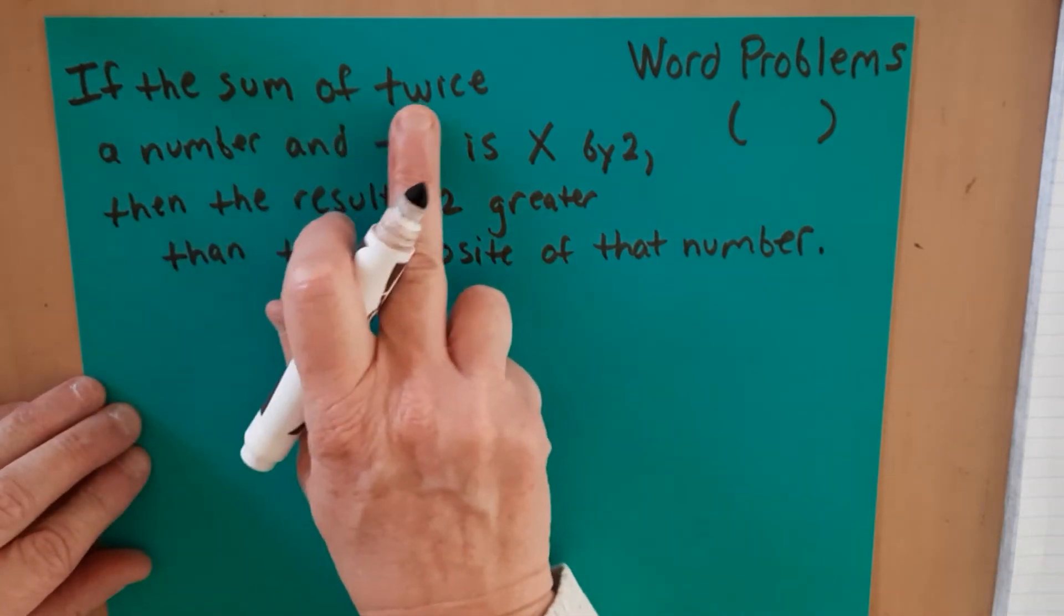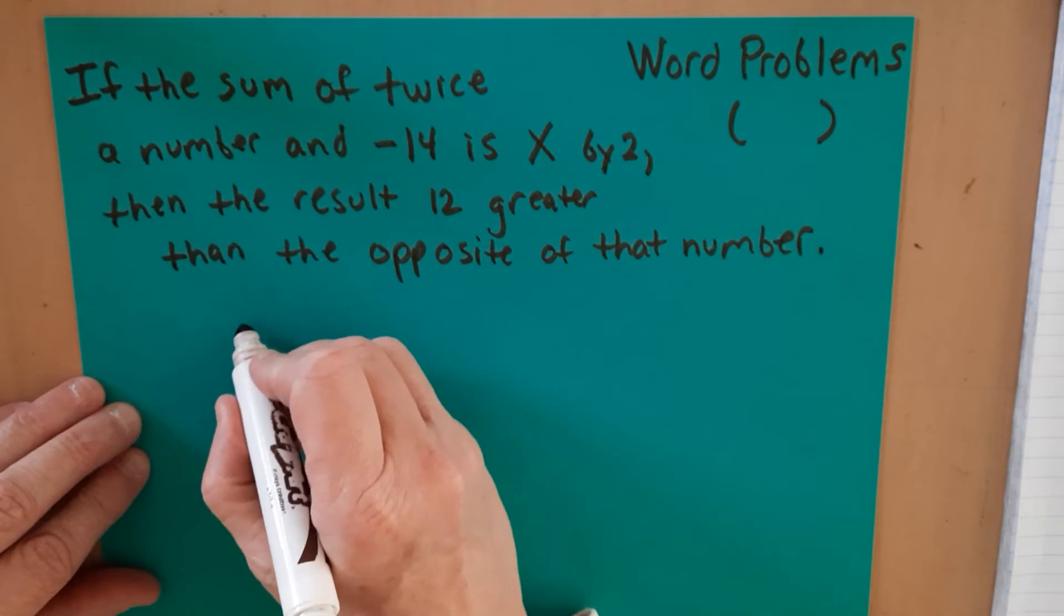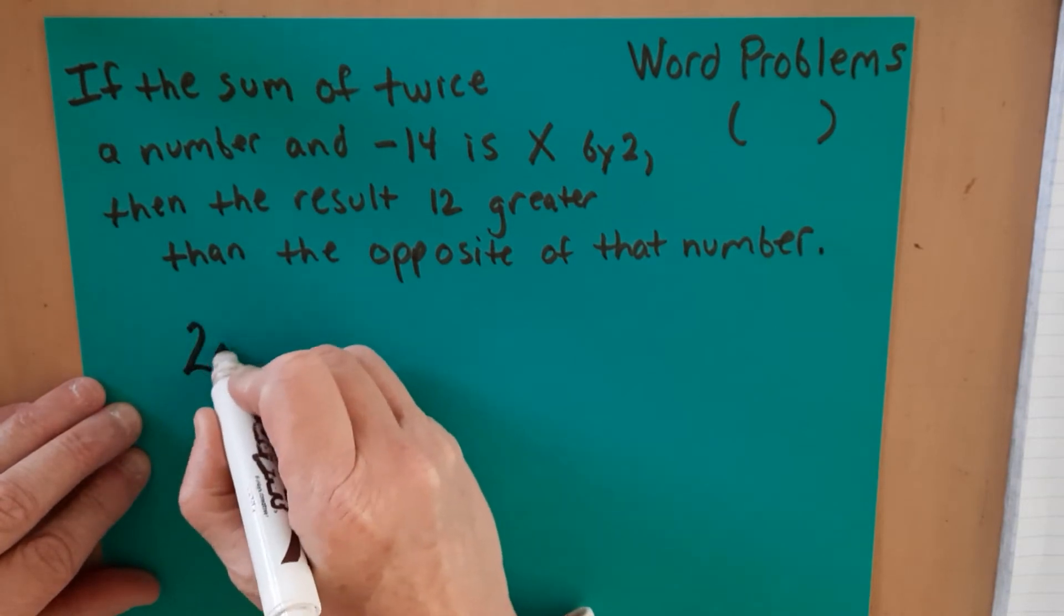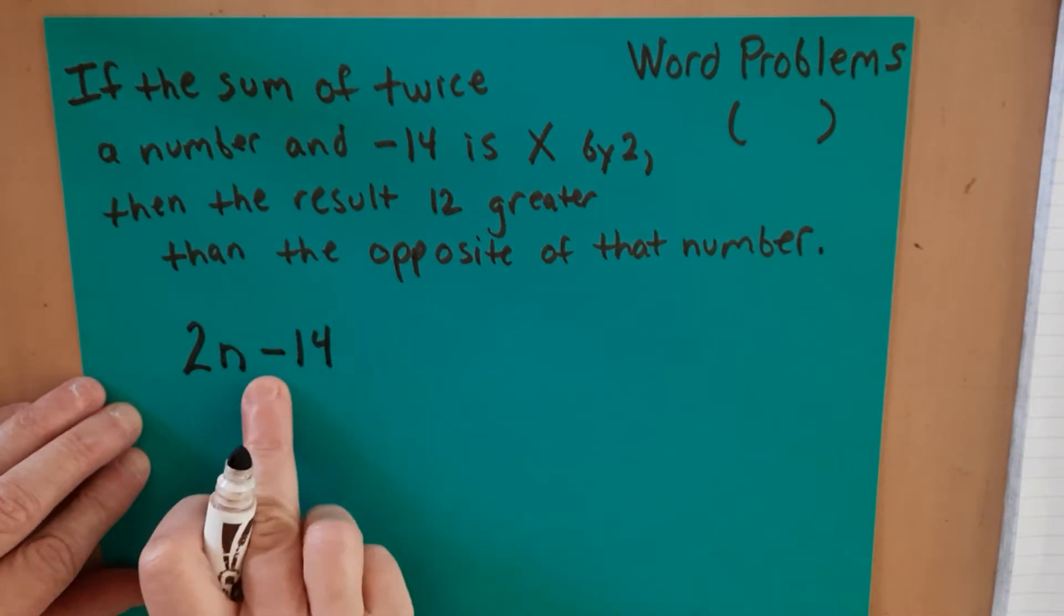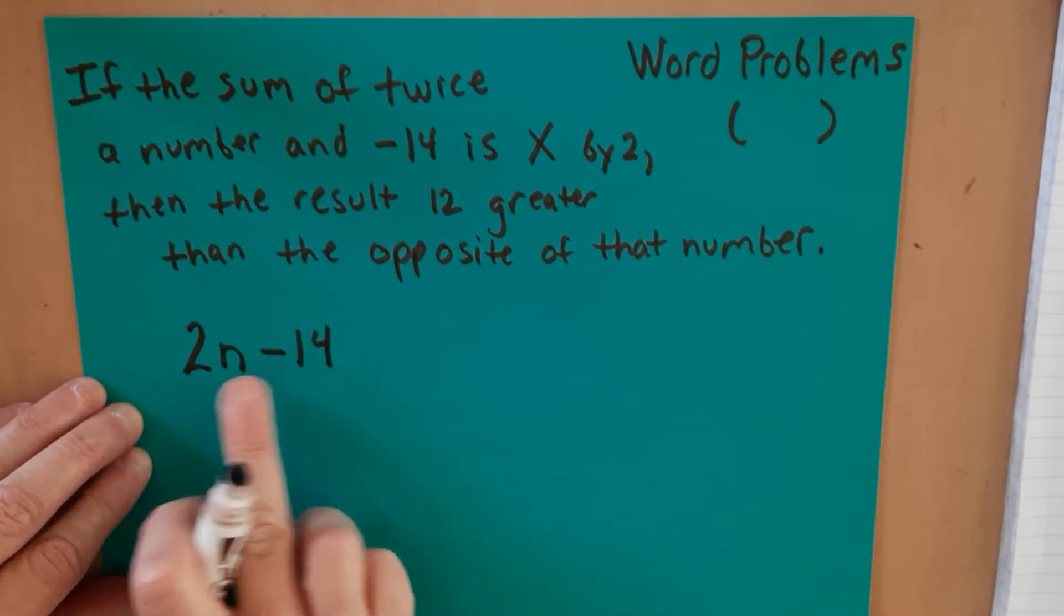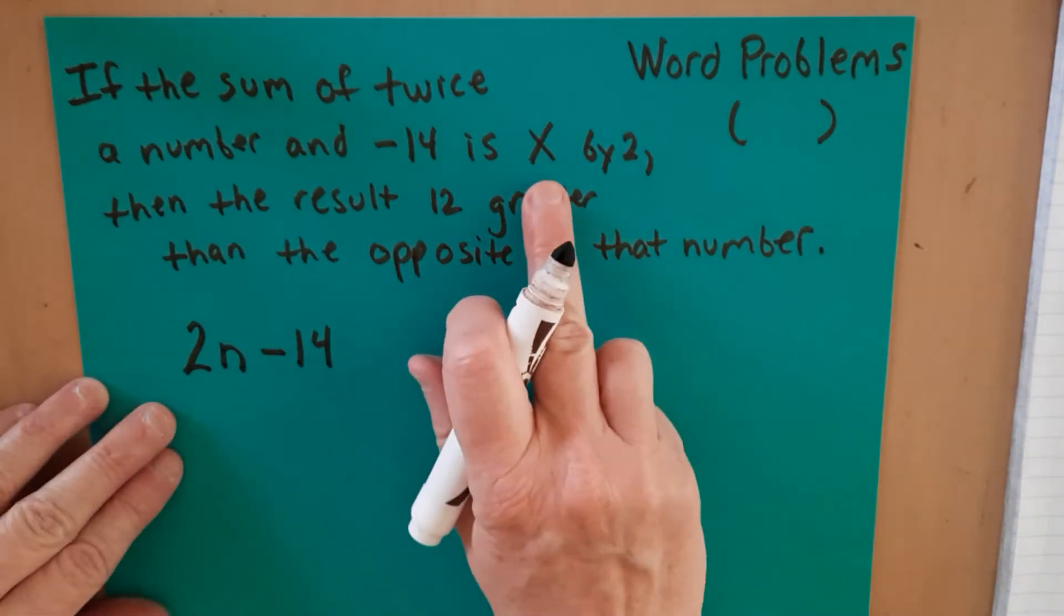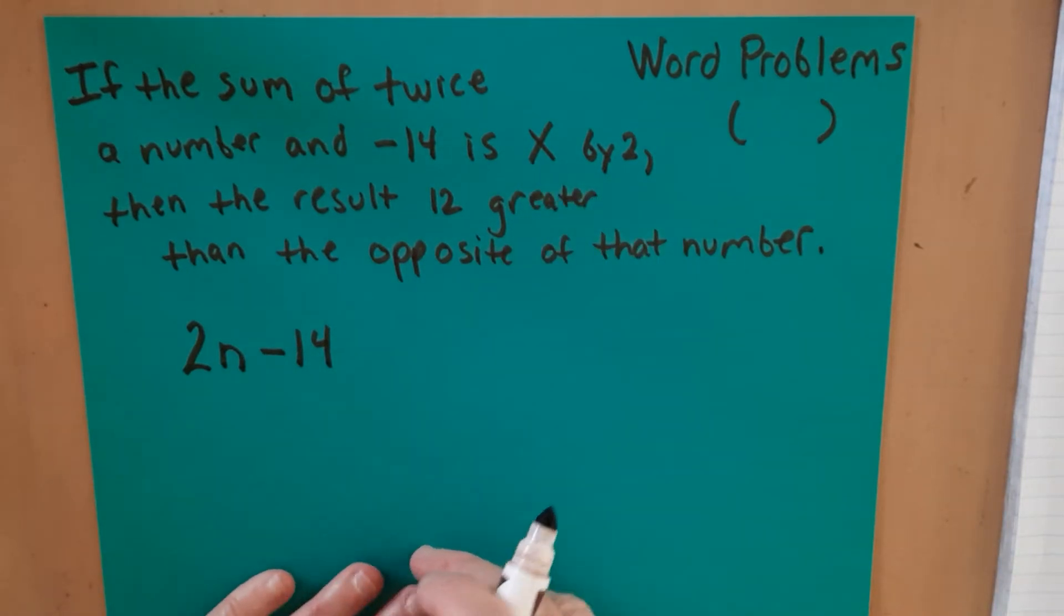Let's start with this: the sum of twice a number and negative 14. So it would be 2 times a number and negative 14. So we are going to subtract 14 from twice a number. Then we want to multiply that by 2. Here's where the problem comes in.